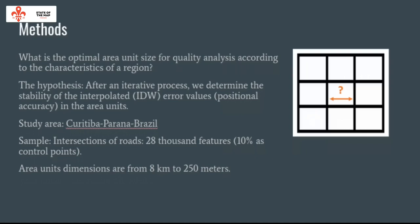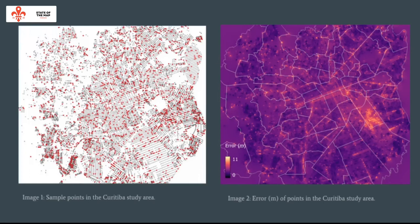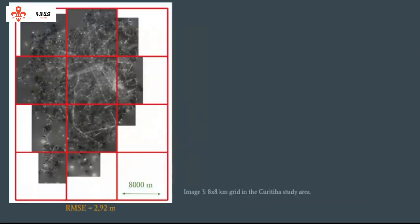The study area is Curitiba, Brazil. The example uses the intersection of roads — 18,000 features — where 10% were control points. Area unit dimensions range from 8 km to 250 meters. Image 1 shows the sample points in the Curitiba study area. Image 2 shows error values of points in the study area. Image 3 shows the 8 by 8 km grid in the study area.